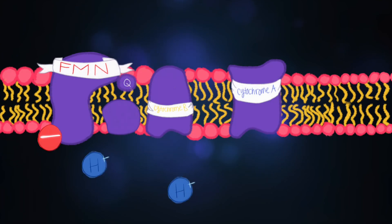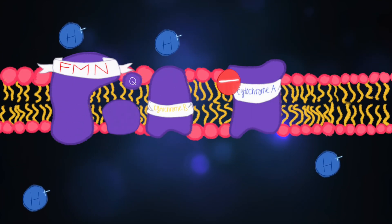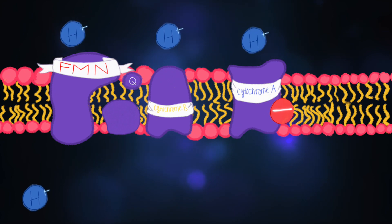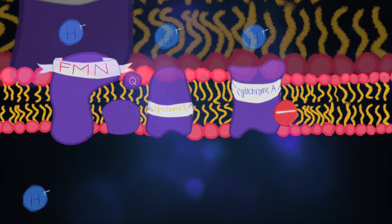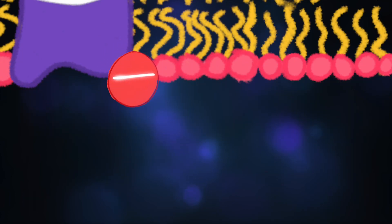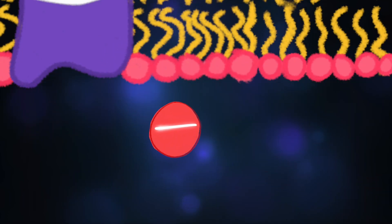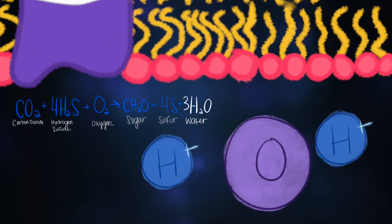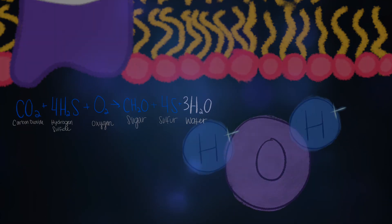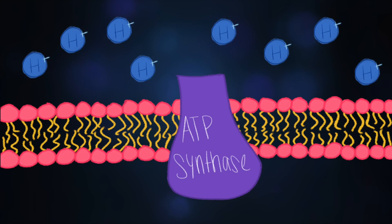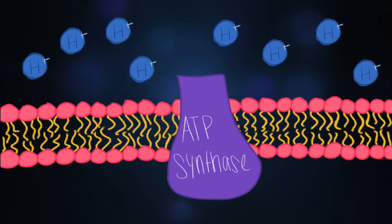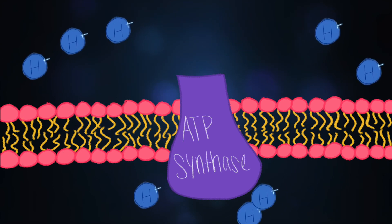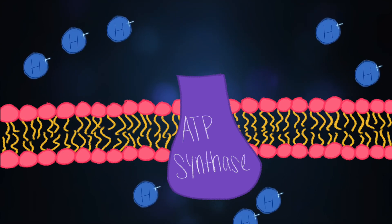As electrons start making their way through the ETC, they start pumping hydrogen protons outside the cell. At the end of their run, the electrons are accepted by oxygen, which attracts hydrogen protons and makes water. Meanwhile, the protons which were gathered outside the cell start making their way back in through an enzyme called ATP synthase.